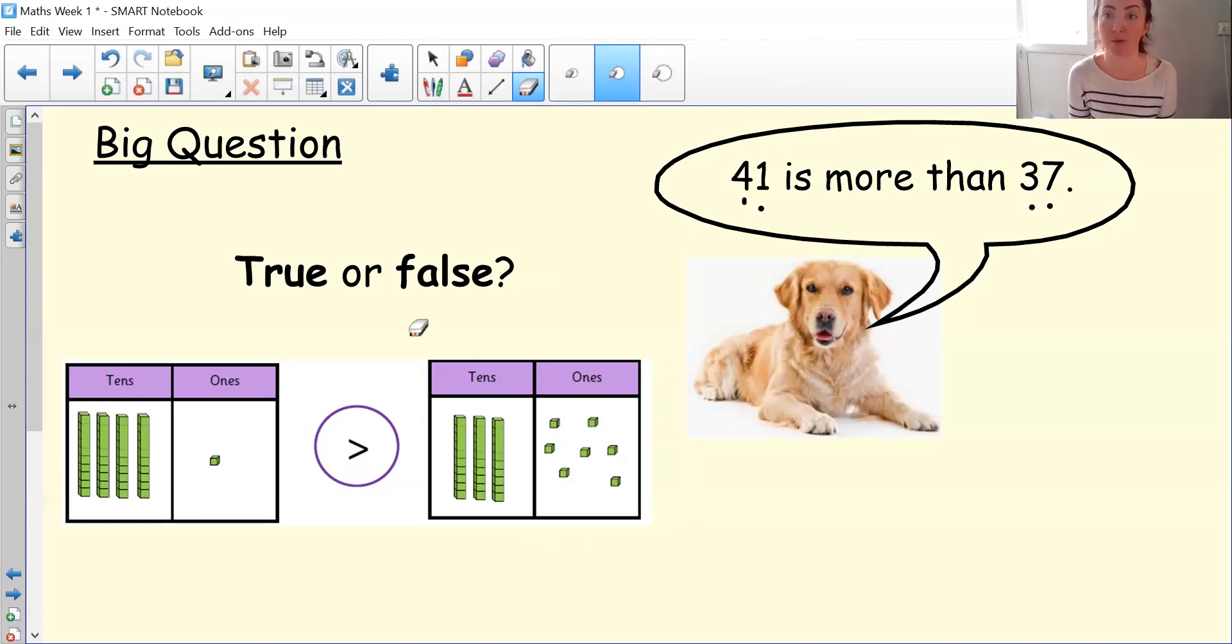Tens, as we know, are worth more than ones. So four tens and one one is more than three tens and seven ones. If you have your hundreds square in front of you, you can check that on there too. You will see that the number 41 comes after the number 37. As we know, if a number comes after another number, it means it's a greater number. So well done, Stevie. You got that one right today. True.